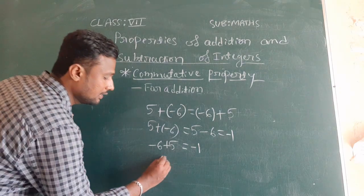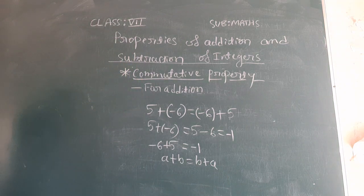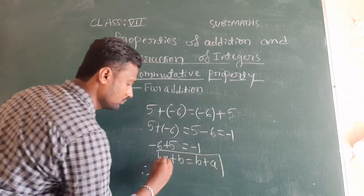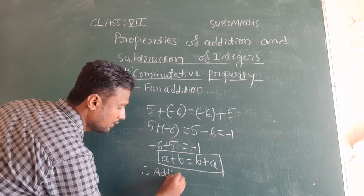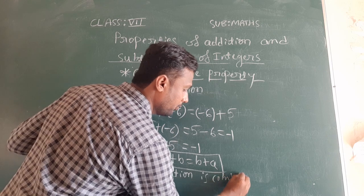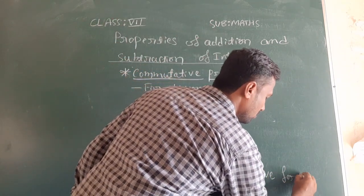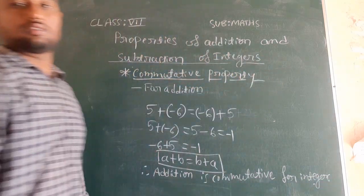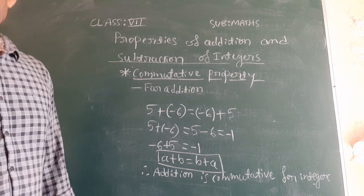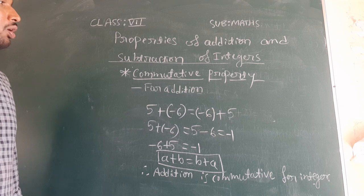Therefore we can write: a plus b equals b plus a. So we can say that addition is commutative for integers. Consider the examples given in the textbook — those values also — and give two or three examples for this commutative property for addition.